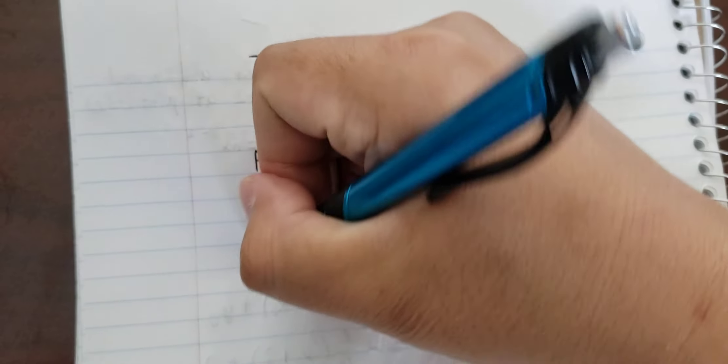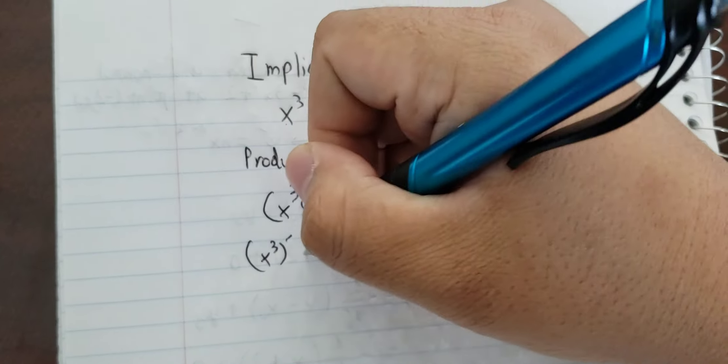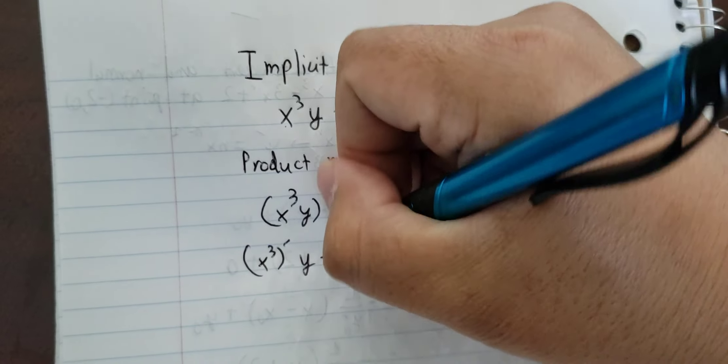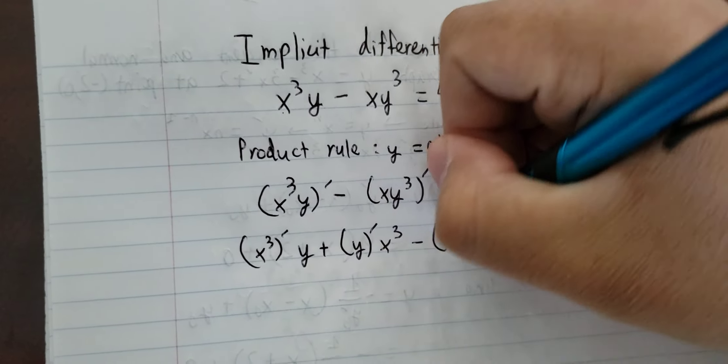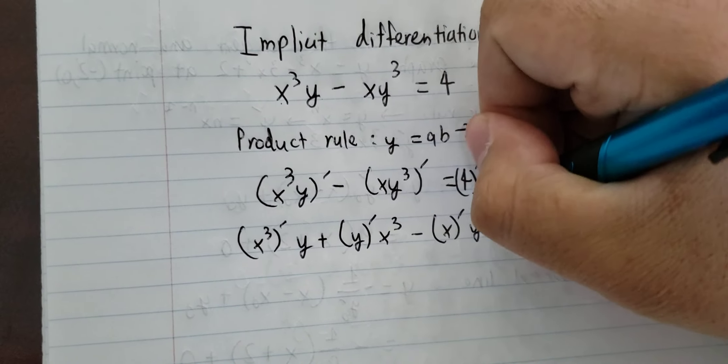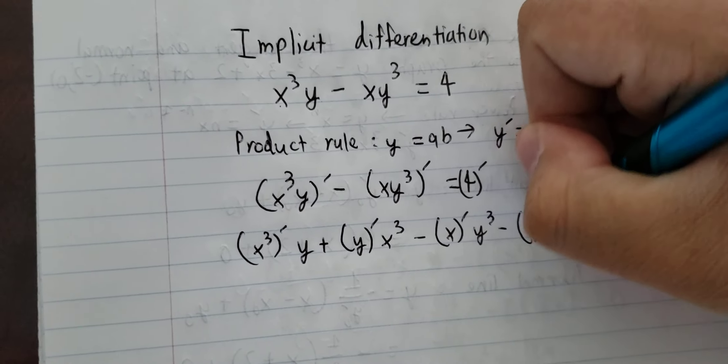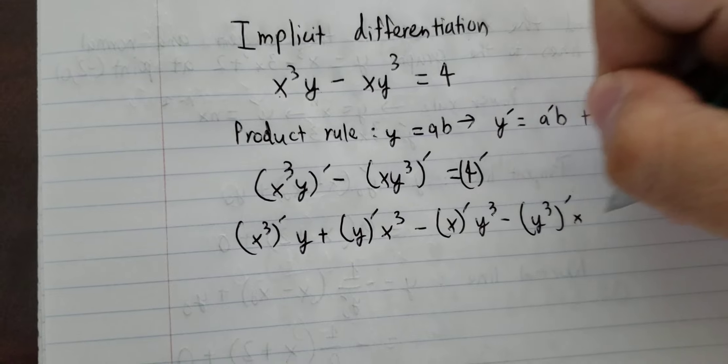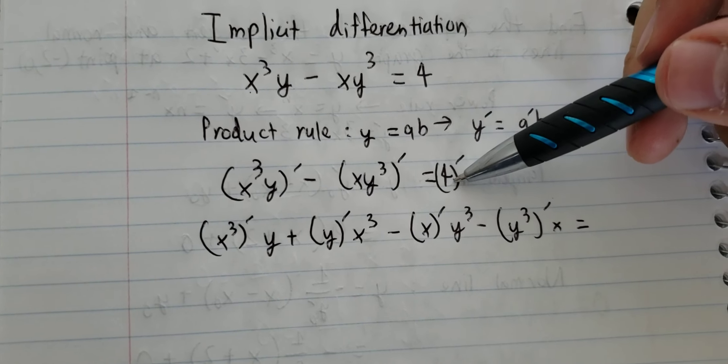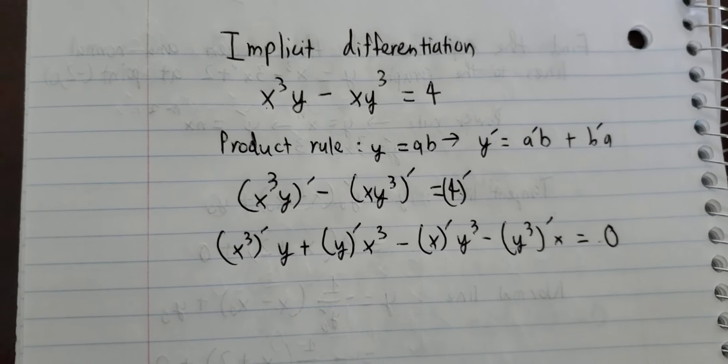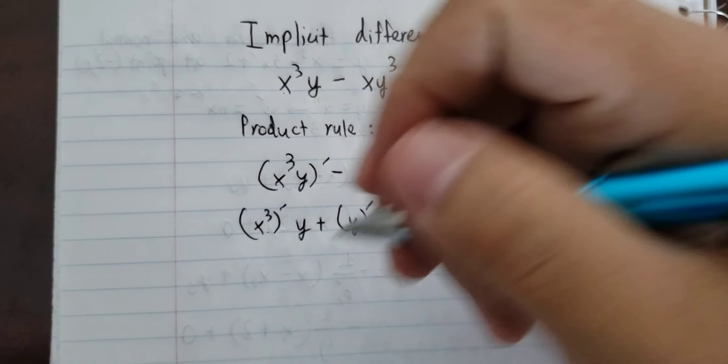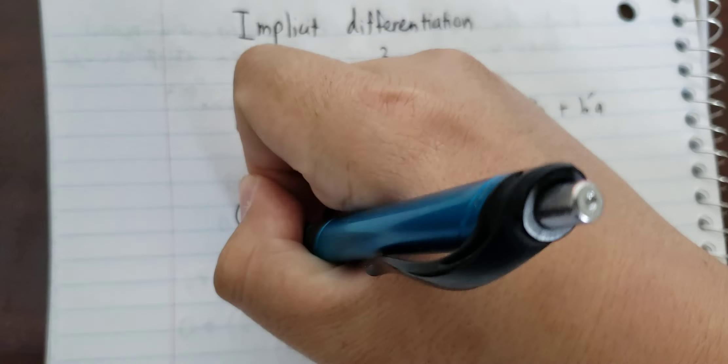For this term, we have it like this. This one is a constant, so you get zero. This one here is 3x squared.